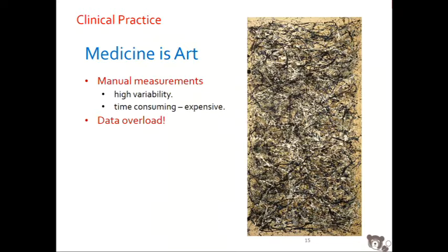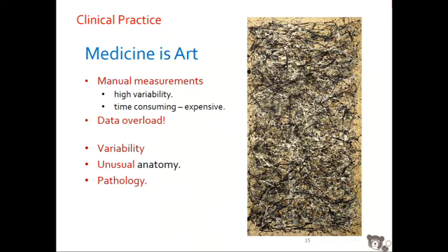So in medicine, in clinical practice, very often measurements in images are manual, which are very variable and take a lot of time — very expensive as well. But now go back and think about the thousands of slices that I was showing you in a computed tomograph. Nobody wants to do that. Variability is important as well because when you see somebody who's sick, the anatomy is unusual and there is pathology in it.